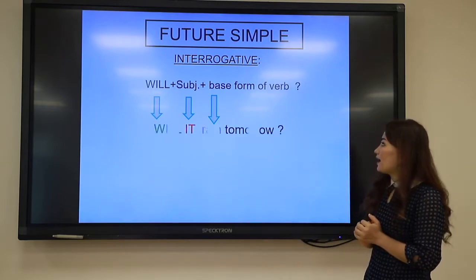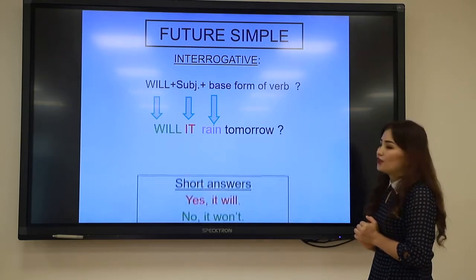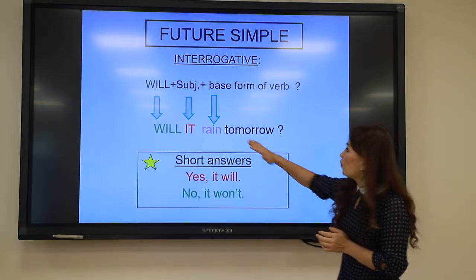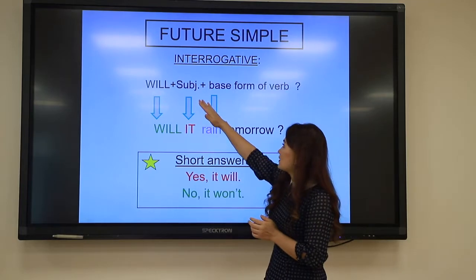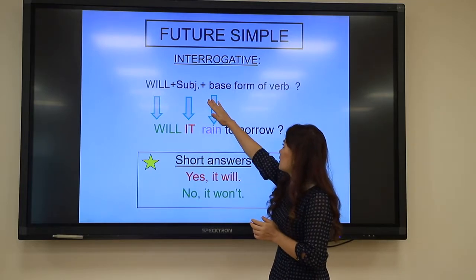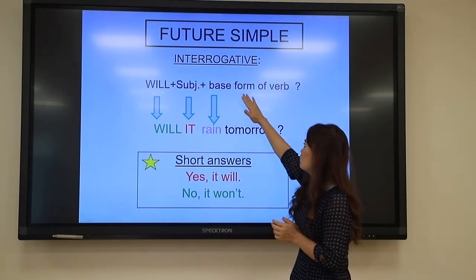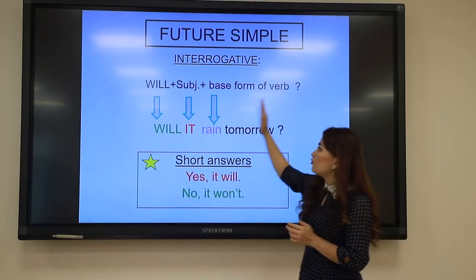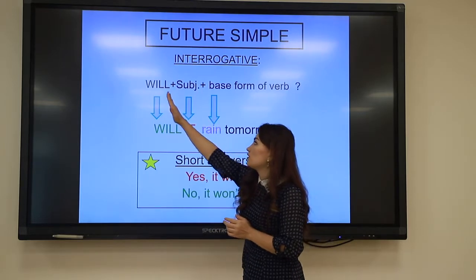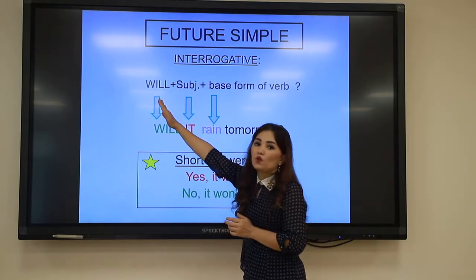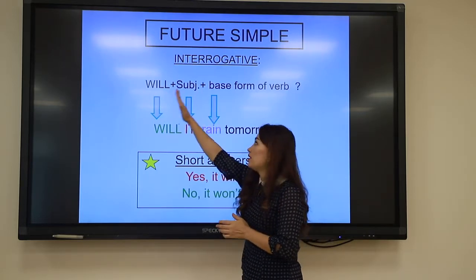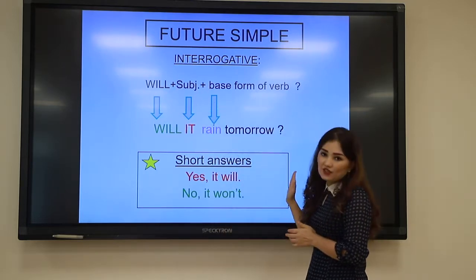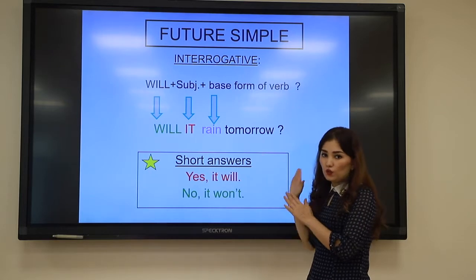The next one is the interrogative form. The structure is: will + subject + base form of the verb. Before the subject, we place 'will.'